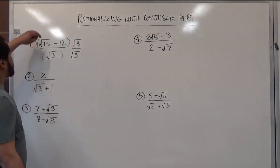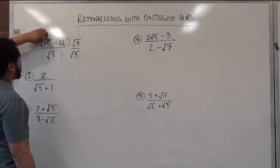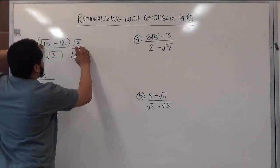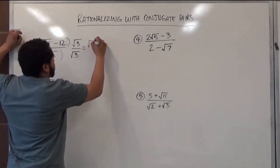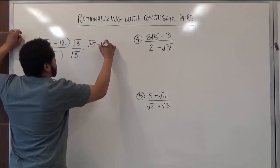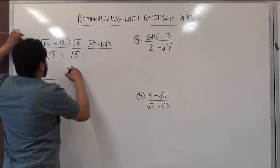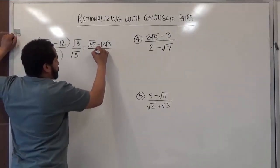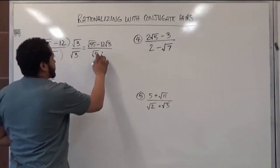We're going to independently distribute the 3 to each term. So radical 3 times radical 15 — we multiply the insides and we get radical 45, minus 12 radical 3's, over radical 3 times radical 3, which is radical 9. Now, the square root of 9 is just 3.